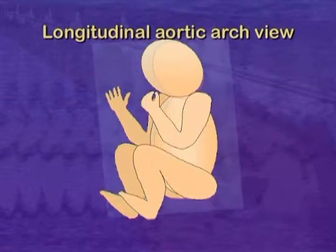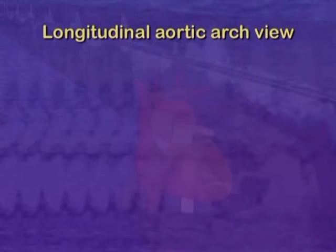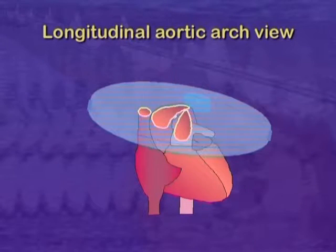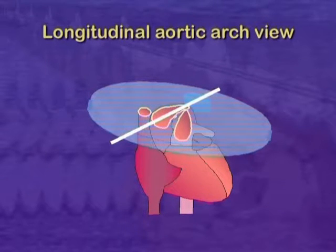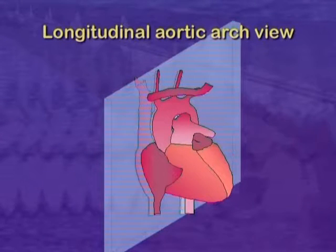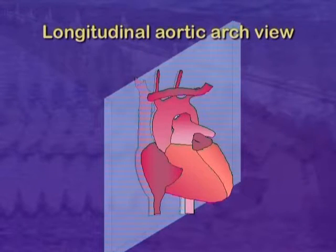A longitudinal view of the complete aortic arch may be obtained in an oblique sagittal plane. Remember from the transverse arches view that the aortic arch sweeps back from the right chest to meet the descending aorta just to the left of the fetal spine. The plane encompassing the complete aortic arch thus passes from the fetal right anteriorly to the fetal left posteriorly.